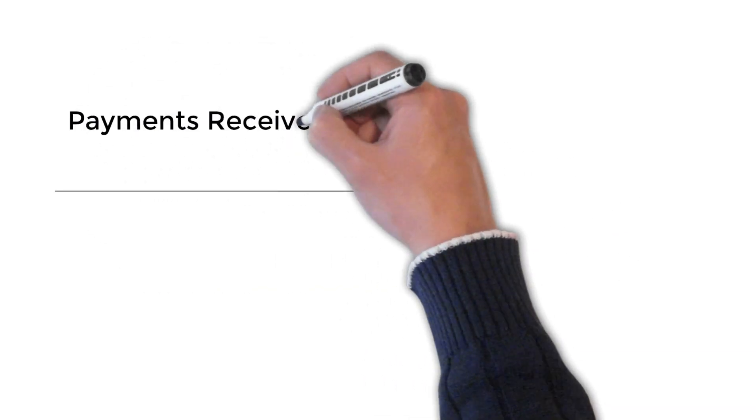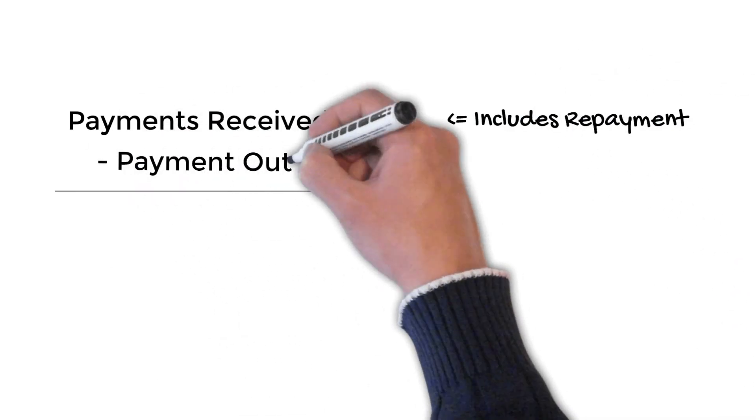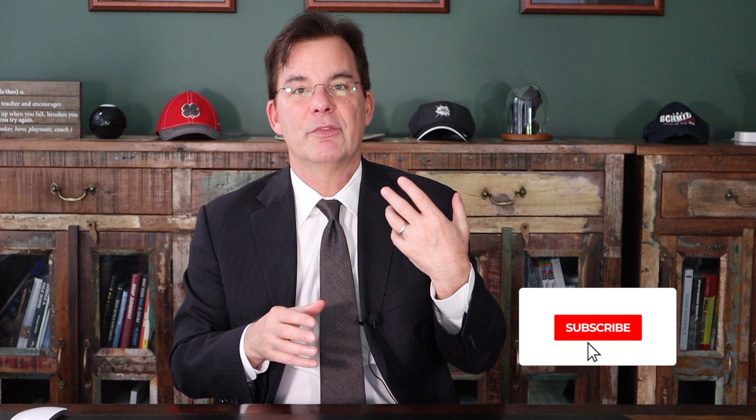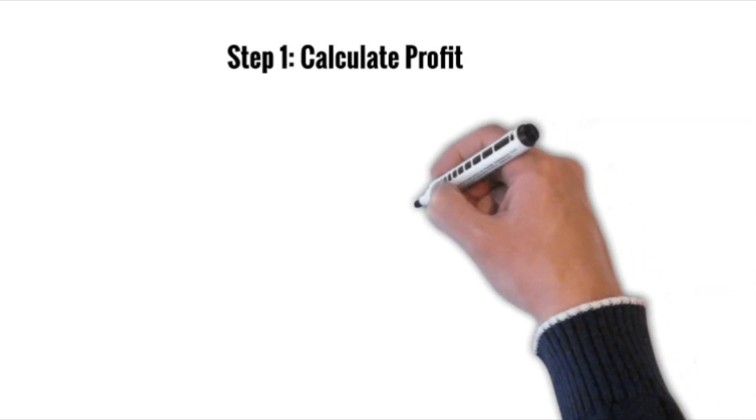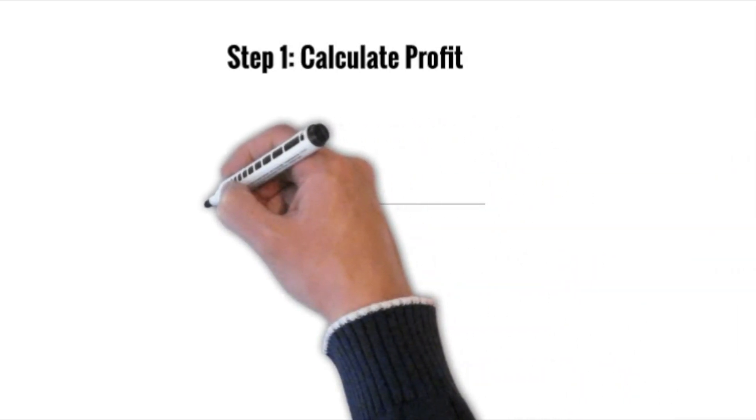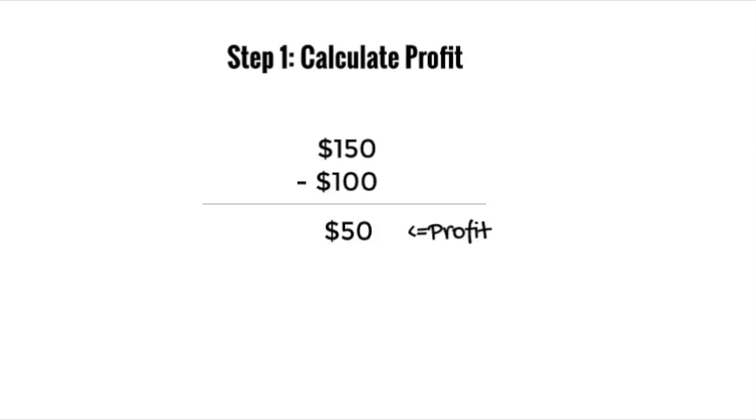Step one is calculating the profit you made in dollar terms. All you do is add up all the payments you received — including the return of your investment, we'll call those PR — and subtract all the payments out, we'll call that PO. So if you bought a share of stock for $100 and sold it two years later for $150, you received $150 (your payment received) and invested $100 (your payment out). Your profit is $150 minus $100, or $50.